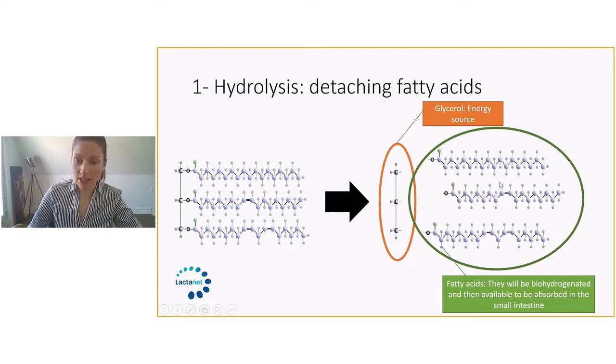This one here in the middle is a monounsaturated fatty acid. There's only one double bond. And the one at the bottom here is a polyunsaturated fatty acid. There are two double bonds here. So the first step is to detach the fatty acid from the glycerol.